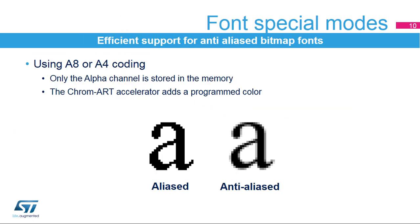Specific modes can be used to efficiently manage texts and fonts. Only the transparency value is stored in memory for rendering anti-aliased fonts. The color is added during the pixel format conversion process and can be programmed by the user. These modes are very efficient for storing high-quality bitmap fonts.